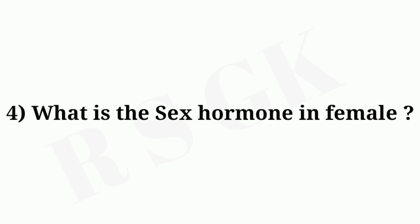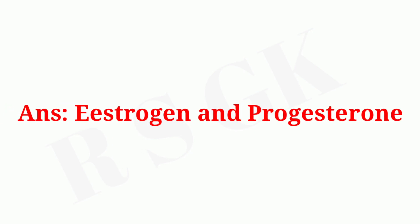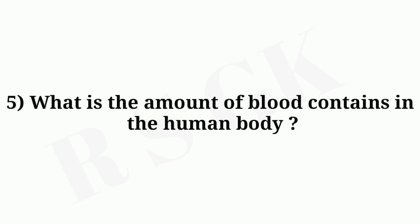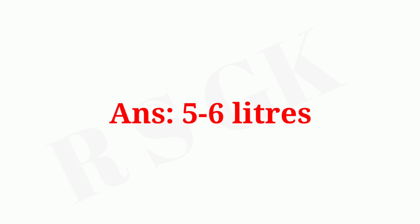Question number four: what is the sex hormone in females? Answer: estrogen and progesterone. Question number five: what is the amount of blood contained in the human body? Answer: five or six liters.